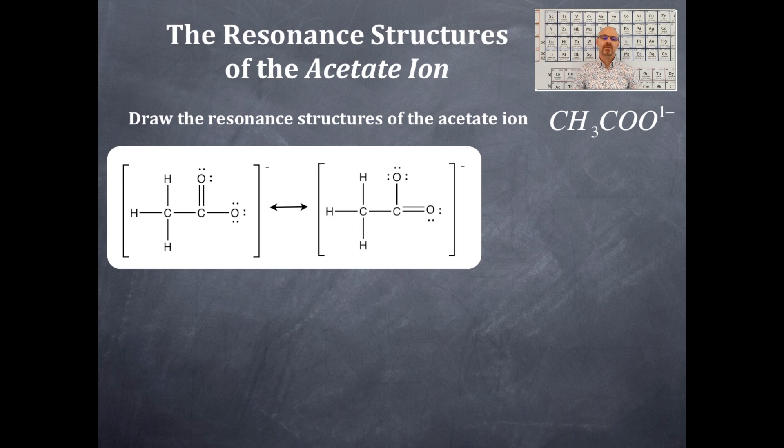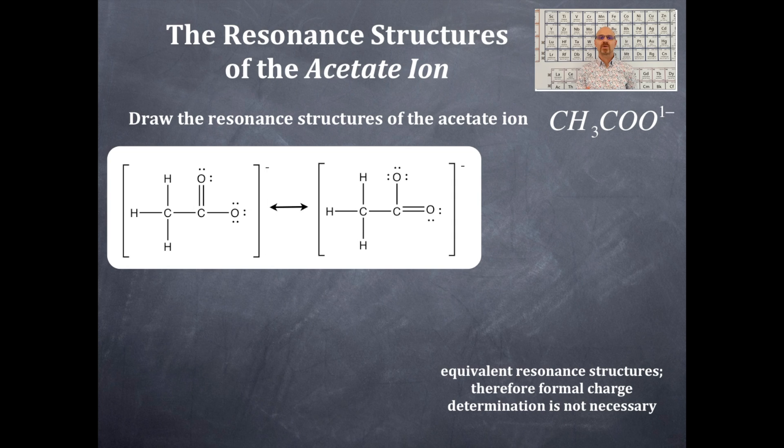Some of them might be, some of them might not be. Okay, these are equivalent resonant structures. And we actually do not need to use formal charge to determine which is the preferred resonant structure of the set, because they are equivalent. Because the formal charges are going to be the same on everything here.